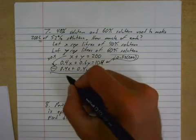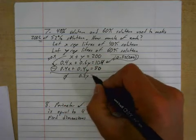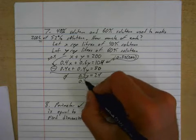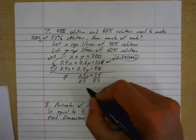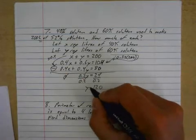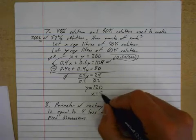Okay, so eliminate, subtract down. This goes away, that goes to 0.2Y, this goes to 24. Divide by 0.2. And Y is equal to 120, leaving X to be 80.